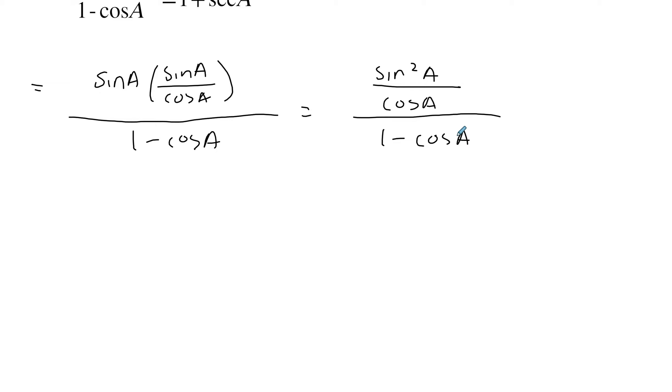So the other method I found was to actually take the identity. So now that I have sine squared A, I can use the Pythagorean identity. So ideally in these questions, they would always want you to use identities and not use partial fractions, but keep partial fractions in case you would need it one day. So this is 1 minus cos squared A over cos A, the whole thing over 1 minus cos A.